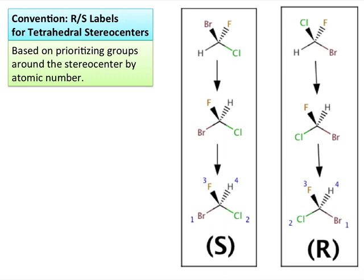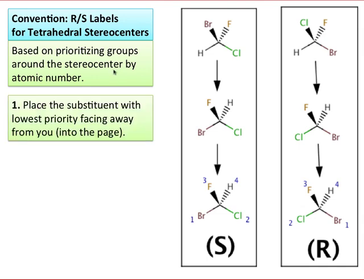There are a few conventions that chemists use to specify configuration for tetrahedral compounds and for alkenes. These are all based on the idea of prioritizing the substituents around the key stereocenter by atomic number. Starting with the molecule on the left, the first step is to prioritize the four substituents around the key stereocenter. We give the number one to the atom of highest atomic number, two to the second highest, three to the third highest, and four to the fourth highest. So in this case, we give a one to the bromine, two to the chlorine, three to the fluorine, and the hydrogen is number four.